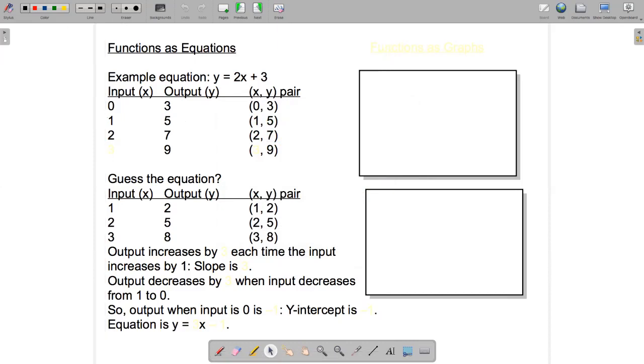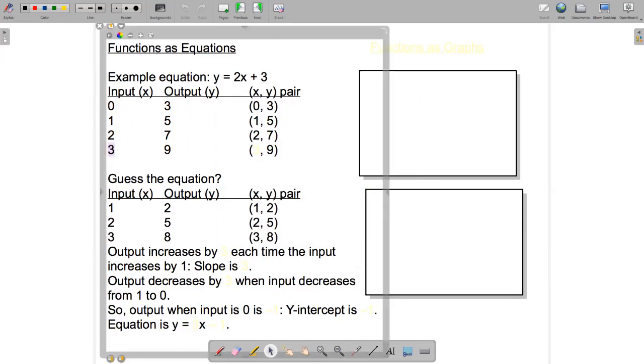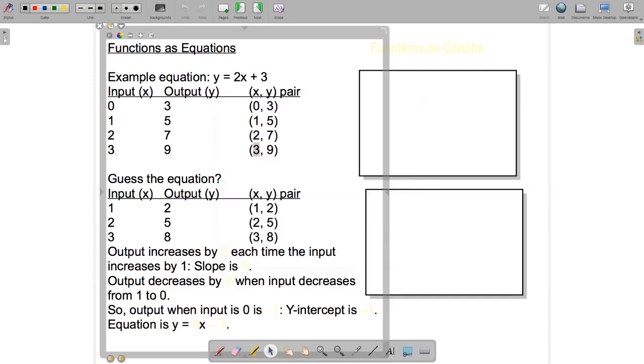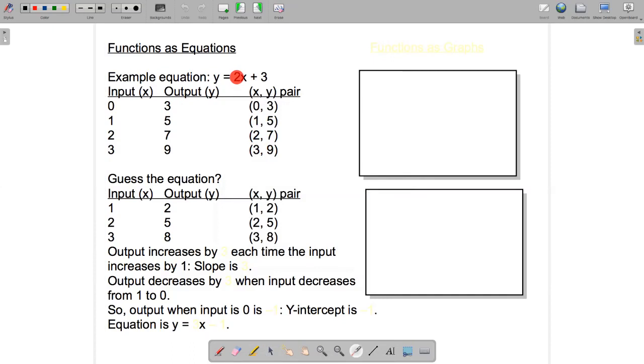Let's go the other way. Let's try and figure out what the input was when we got an output of 9. Let's see if we can figure it out from the table. Looks like the output increases by 2 each time the input increases by 1. So by just observing the pattern, we should be able to see that this input must be 3. Let's check that that's correct by plugging 3 into our equation. 2 times 3 comes to 6 plus 3 comes to 9. Yes, it's correct.